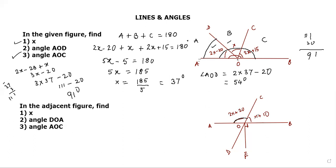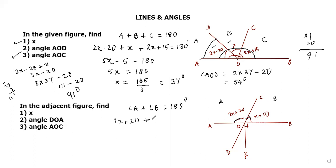Again, on the straight line there are two angles a and b, so angle a plus angle b equals 180 degrees. Angle a is given as 2x plus 20, and angle b is x plus 10, so the equation is (2x + 20) + (x + 10) = 180.